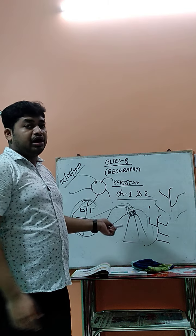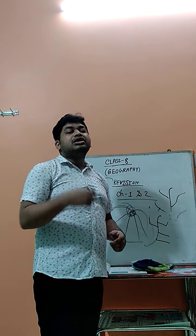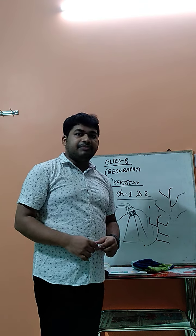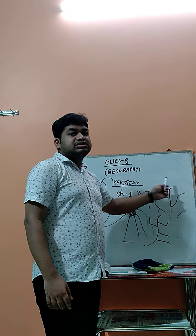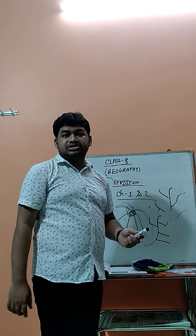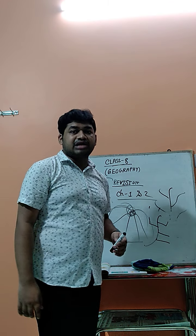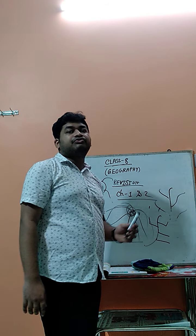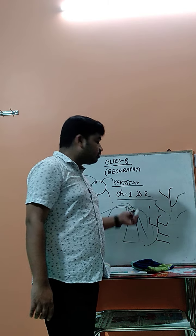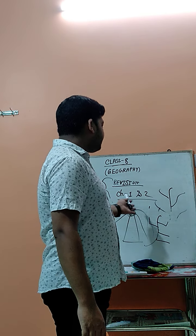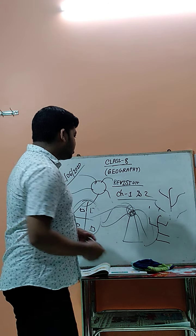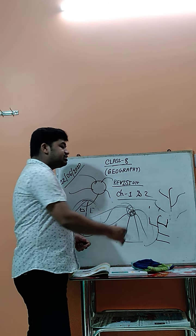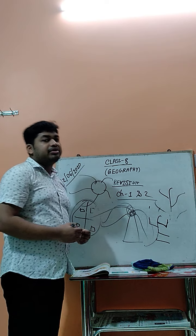To recap, the drainage system is divided into three parts. The first is the dendritic type — when all the small rivers join with the main river flowing in different directions, resembling tree branches. The second is the radial type — when all rivers come out from a mountain, glacier, or particular place, like a volcanic eruption. The third is the trellis type — when all the small rivers join with the main river at a specific angle.